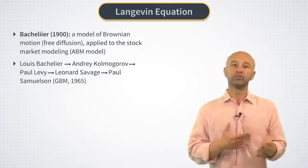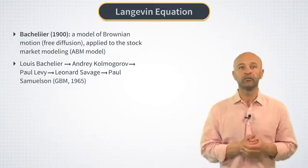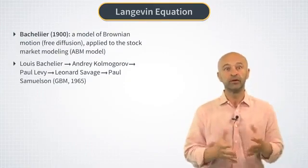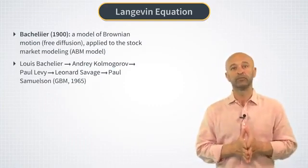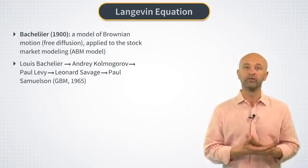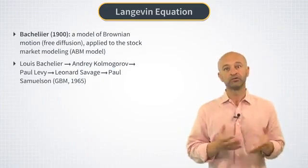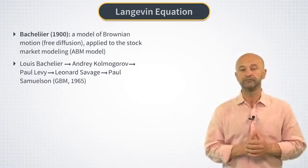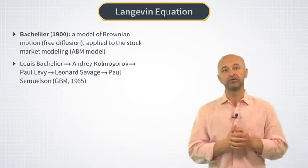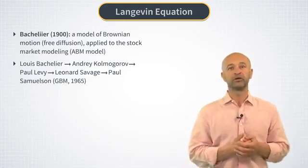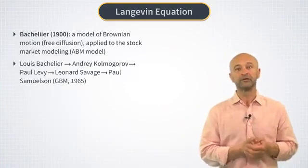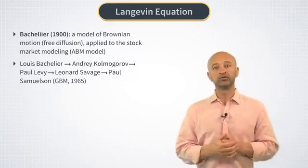The contribution of Paul Samuelson from 1965 was the invention of the geometric Brownian motion, or GBM model, as a way to improve a problem with the ABM model. The problem was that in the ABM model, a stock price can go negative. And in contrast, in a GBM model, a stock price not only cannot go negative, it can't even become zero.